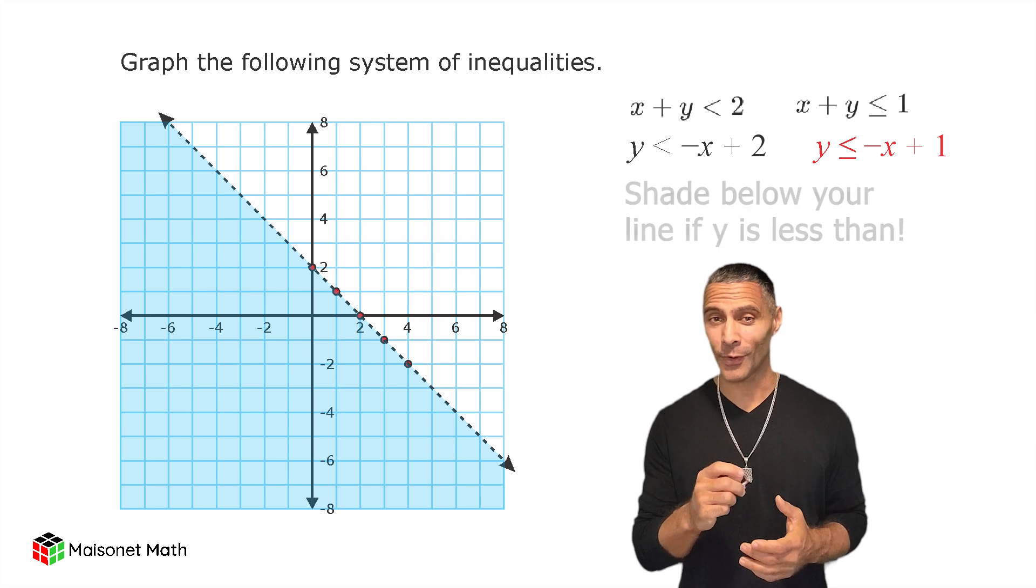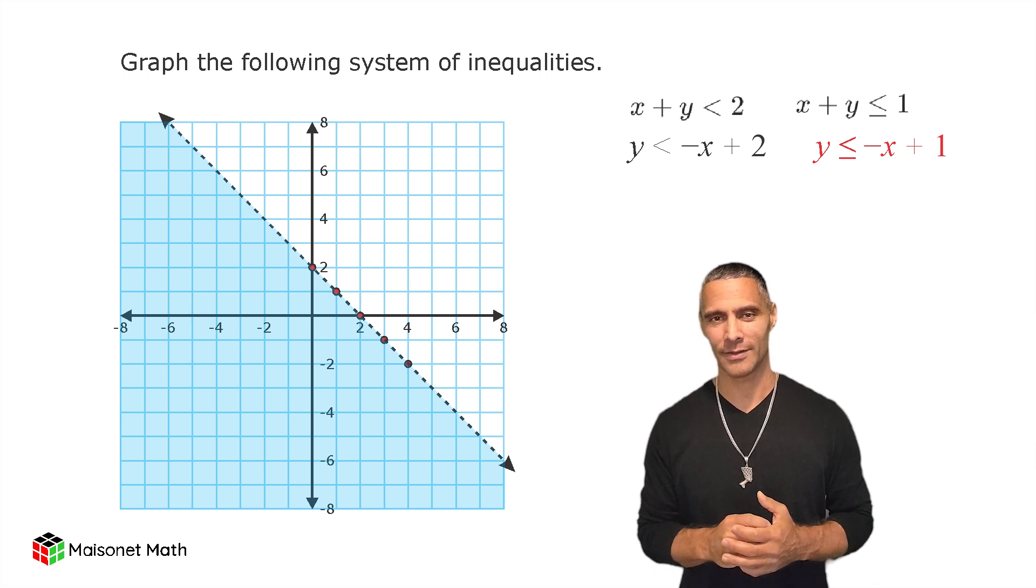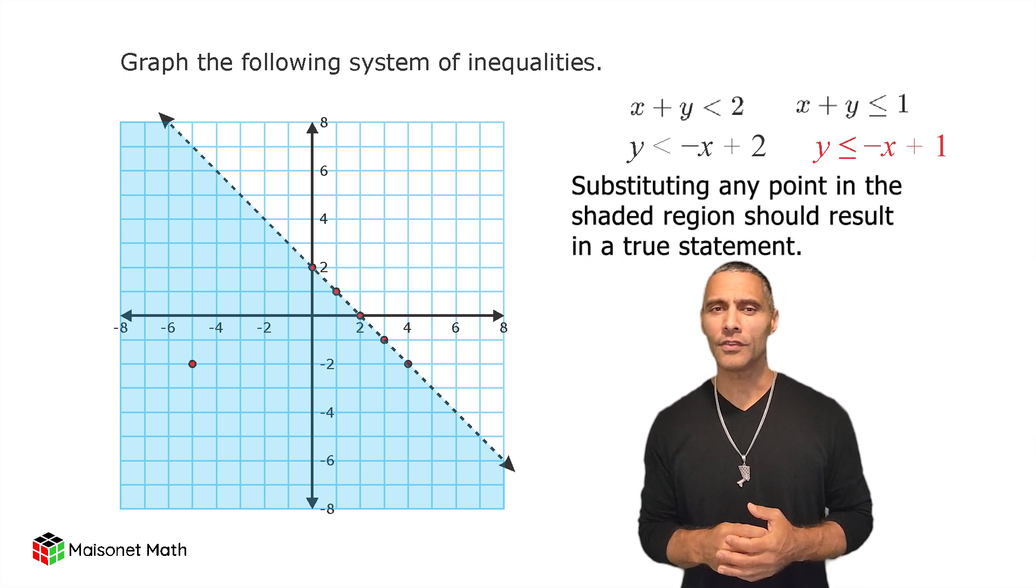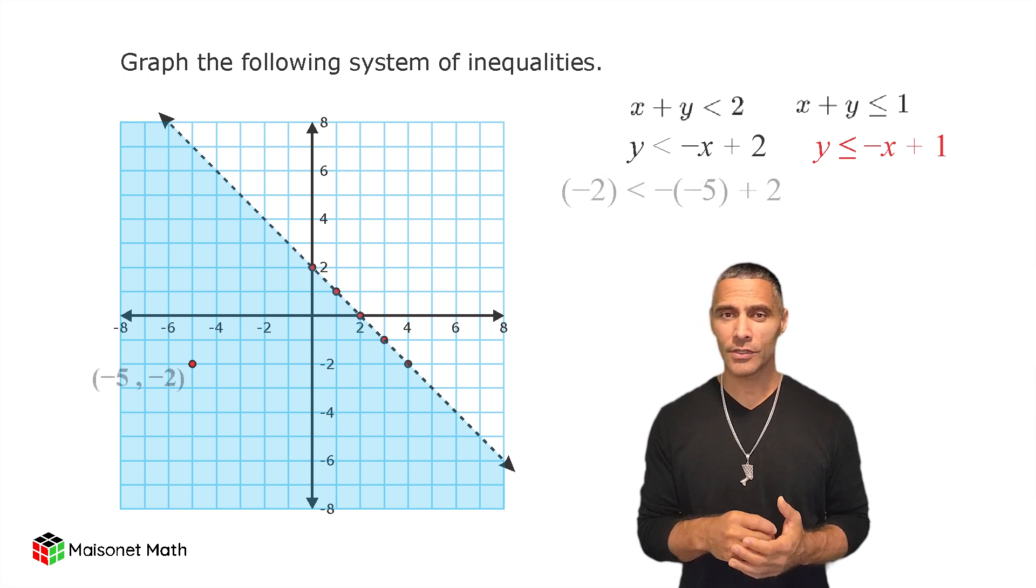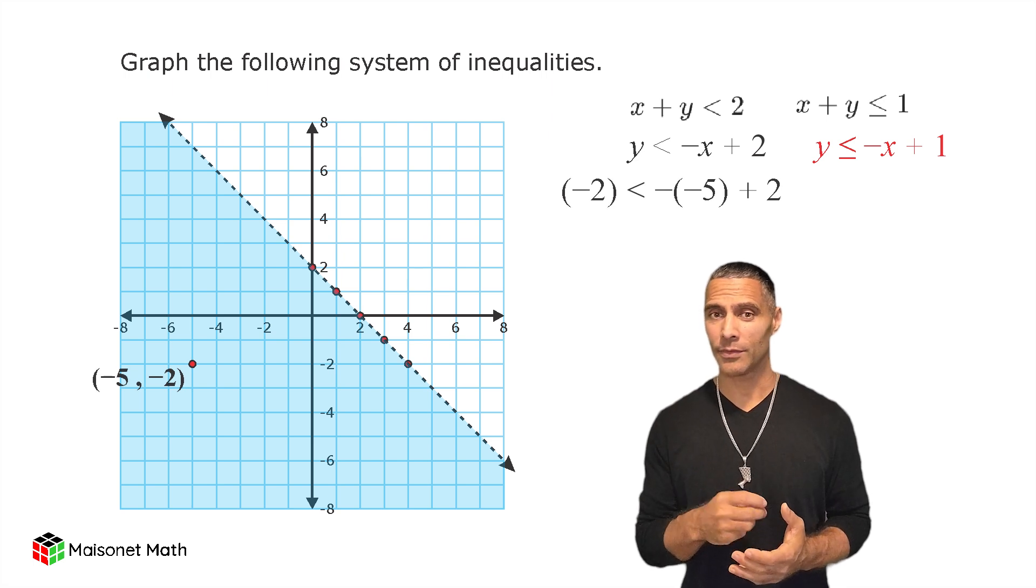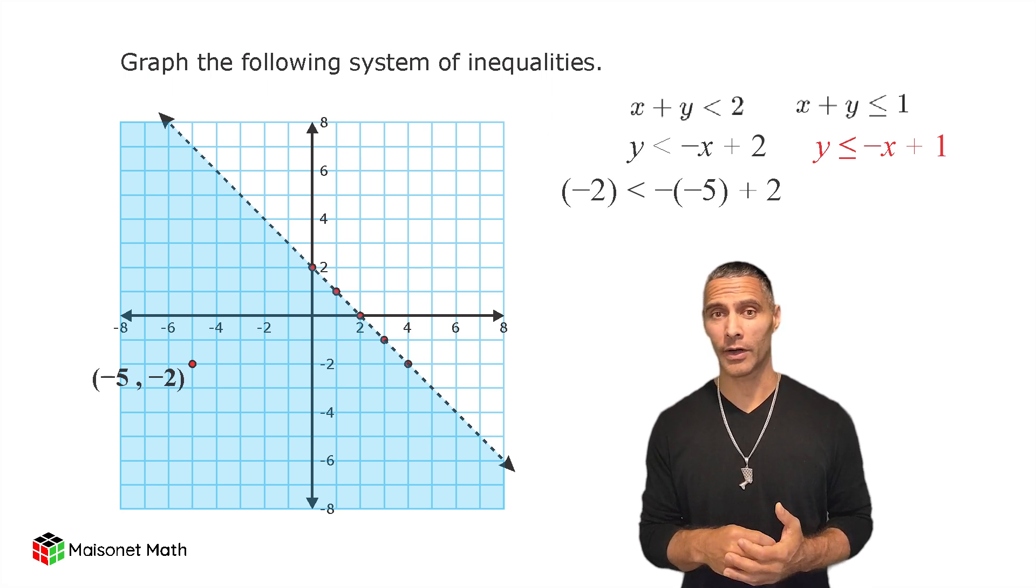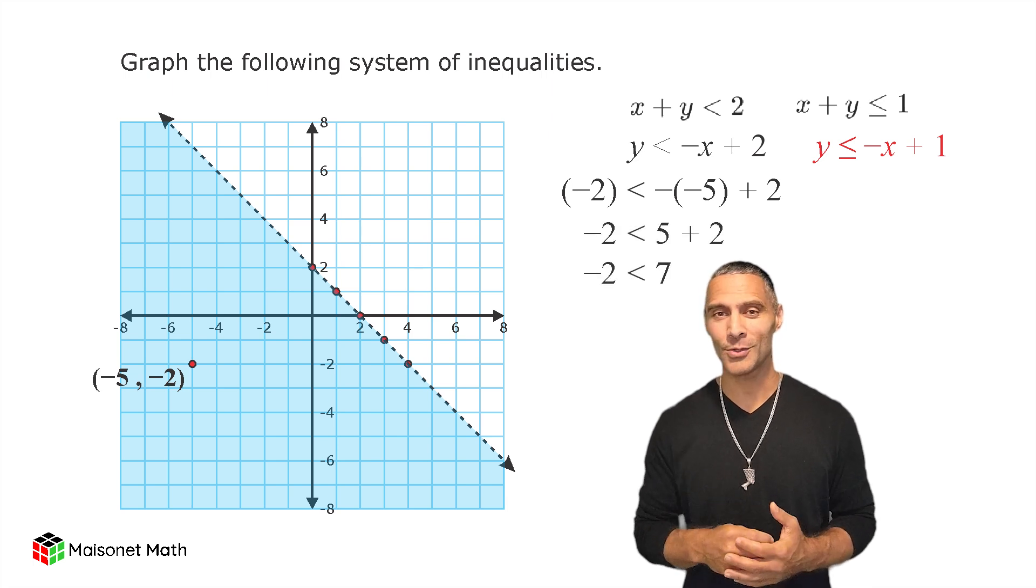All right, now let's test a point to confirm that we shaded the correct region. For example, let us use negative 5 and negative 2, which is in the shaded region. Substituting x equals negative 5 and y equals negative 2 into our inequality gives us negative 2 is less than 7, which is a true statement. This confirms that the solution region is below the dotted line.